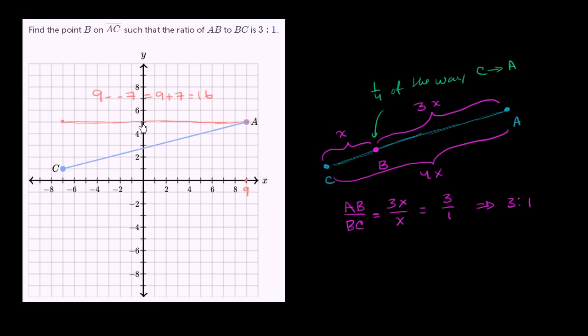And you see that here, 9 plus 7, this total distance is 16. That's the horizontal change going from A to C, or going from C to A.